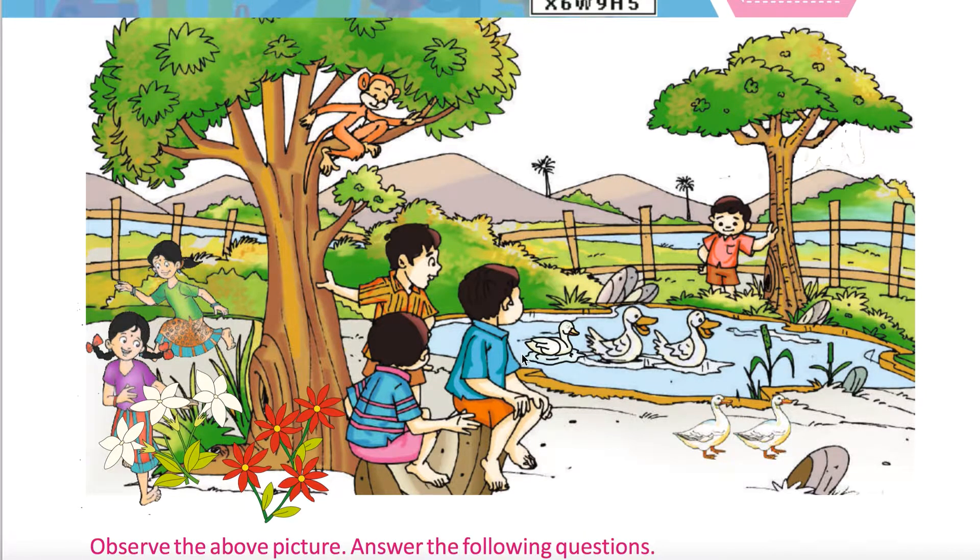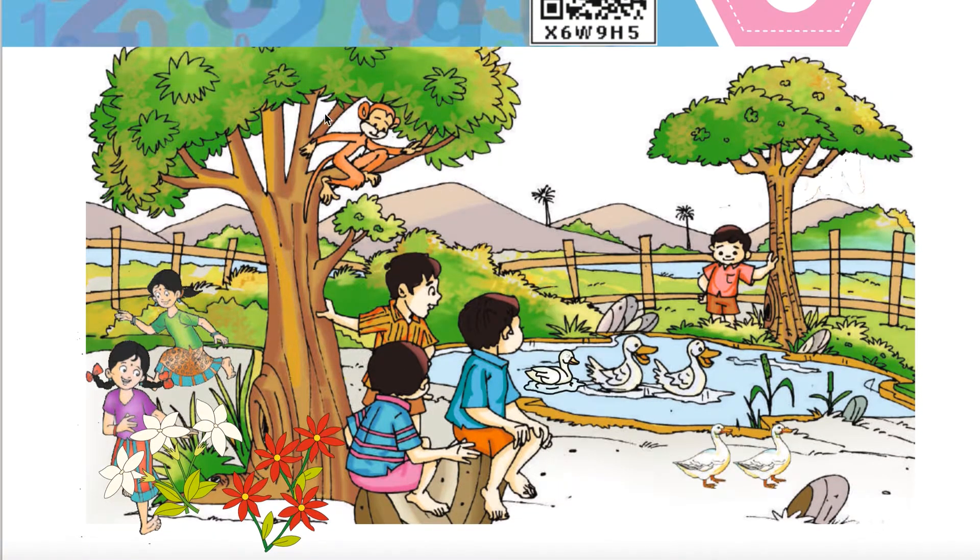How many children are there? One, two, three, four, five, six. Out of six, four boys and two girls. One monkey is there, two trees are there nearby.